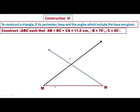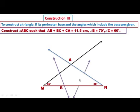Here the angle is 35 degrees and here the angle is 30 degrees. Name this intersection vertex as A. Then draw the perpendicular bisector of segment AM. Then draw the perpendicular bisector of segment AN.